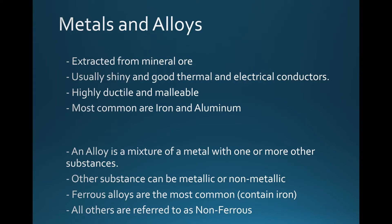Next we have metals and alloys. Metals are extracted from the ground — from what we call an ore. If there's a lot of metal in the ground, it's called a deposit; once we take it out, we call it an ore. Metals are usually shiny and are good thermal and electrical conductors. They're highly ductile so we can stretch them to make wires, and they're malleable, so we can bend and shape them easily.